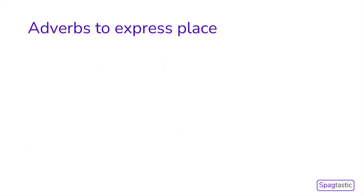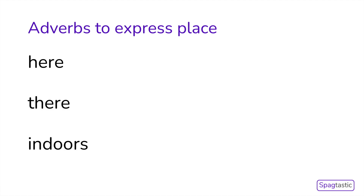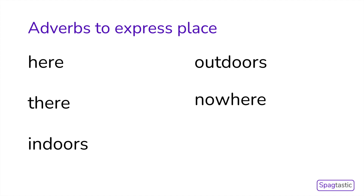Finally, let's learn about adverbs for place. These tell us where the action or verb happens. Adverbs for place include words such as here, there, indoors, outdoors, nowhere and upstairs.